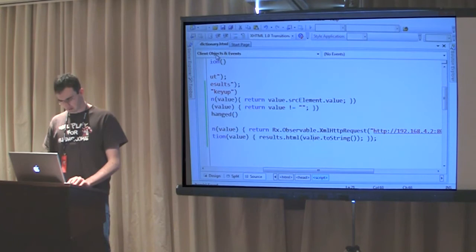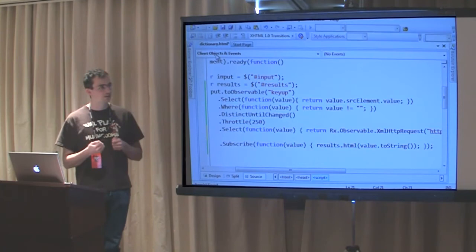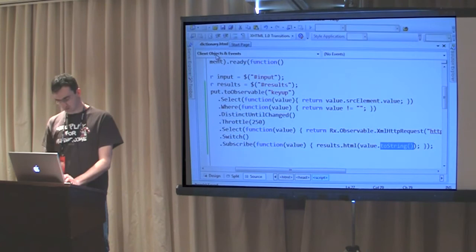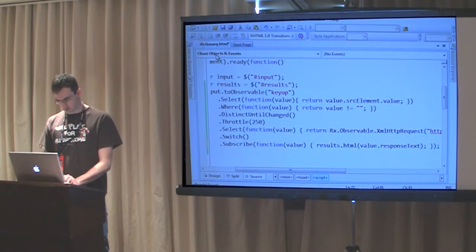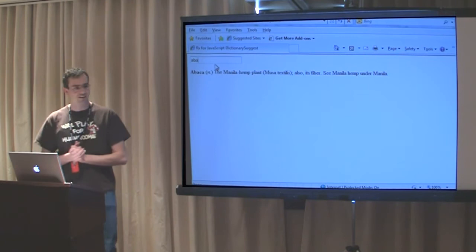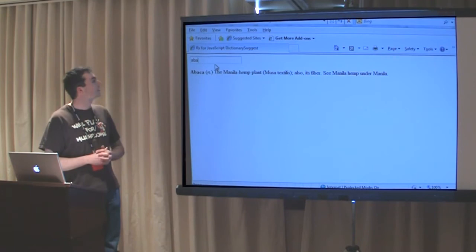There's one thing we still need to do - I just make an XMLHttpRequest for every value, and I said that was bad because you can have overlapping results. I'm going to use the switch operator, which switches between new observables the moment they come in. I'll type switch, and while at it, change to use the response text. This is a 1913 dictionary, not fancy, but I could find it without licensing issues. We have our dictionary suggest working.